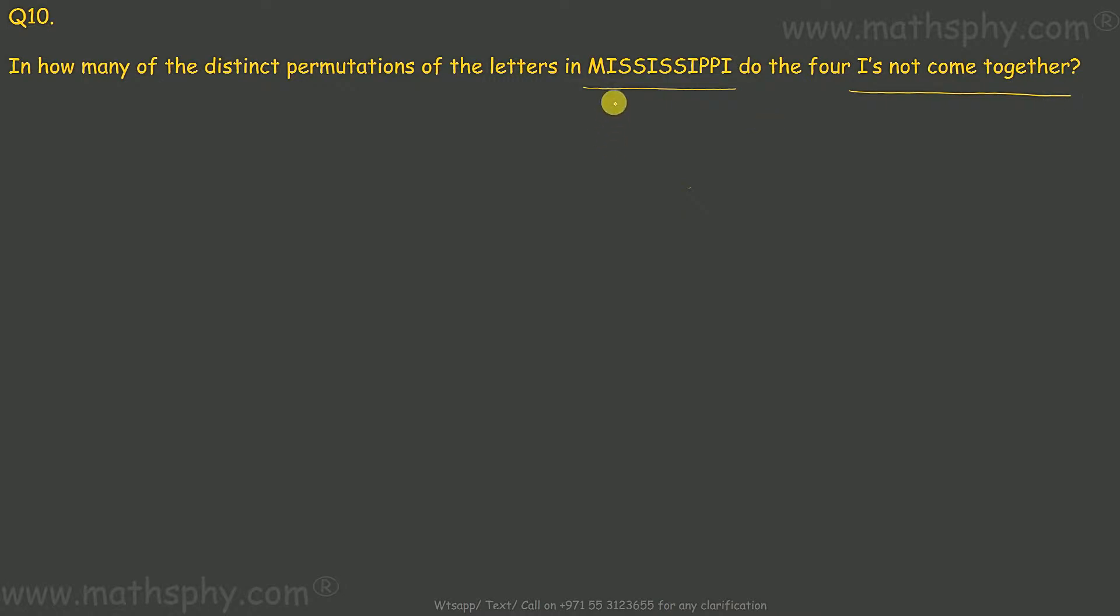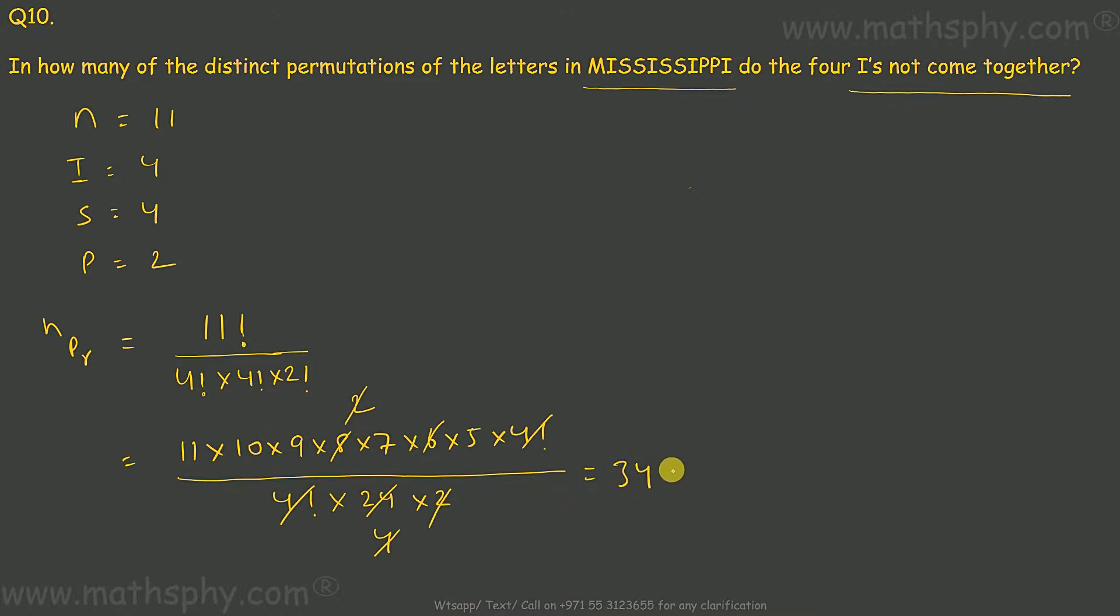So what we can do here is, let's think about a normal permutation of this Mississippi first. That will be, I have 11 letters, where I have I as 4 times, and I have S as 4 times, and I have P as 2 times. So for this arrangement would be, we will write NPR would be 34,650 arrangements.